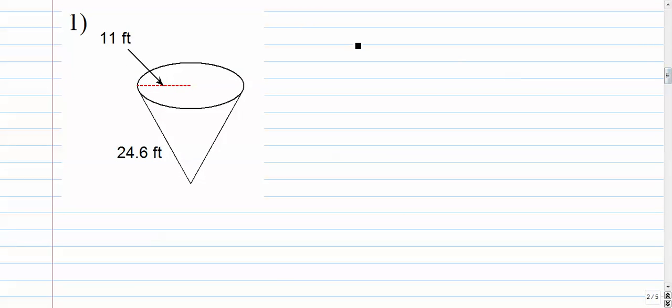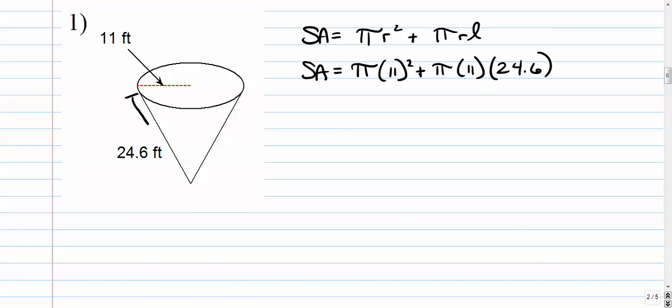Number one: write the formula down. It's the circle plus the lateral surface area. So we have radius already, that's given to us, that's 11, and the slant height is given as well.